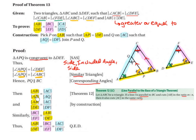Then AB divided by AP equals AC divided by AQ. This comes from Theorem 12, the Line Parallel to the Base of a Triangle Theorem: if a line is parallel to BC and cuts AB in the ratio M to N, then it also cuts AC in the same ratio. Therefore, AB divided by DE equals AC divided by DF. Similarly, BC divided by EF equals AB divided by DE.